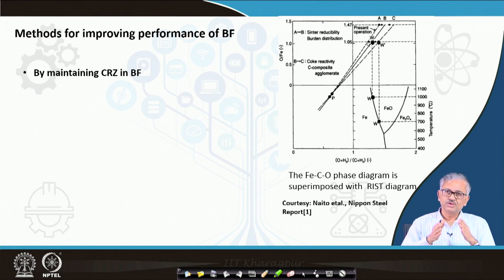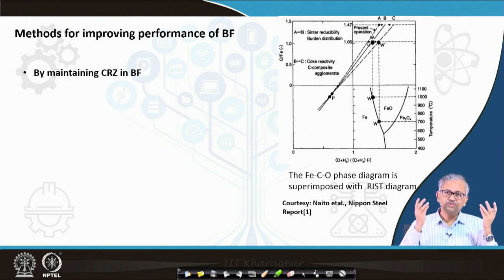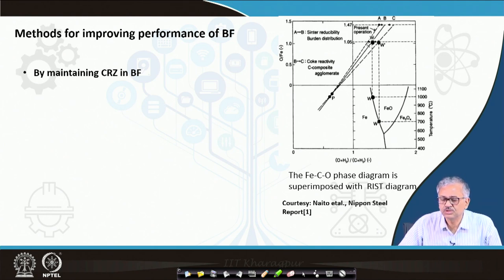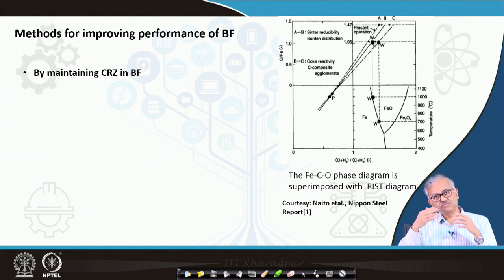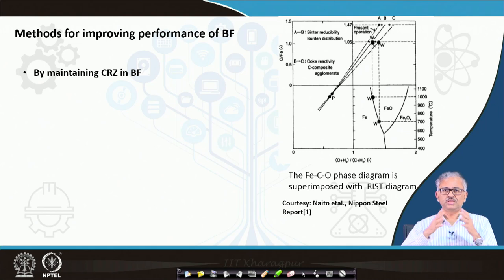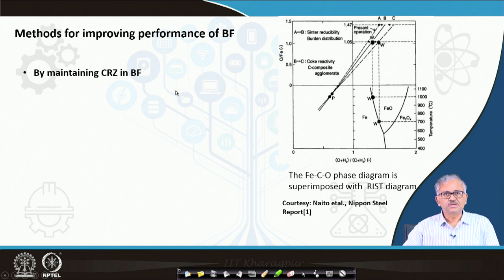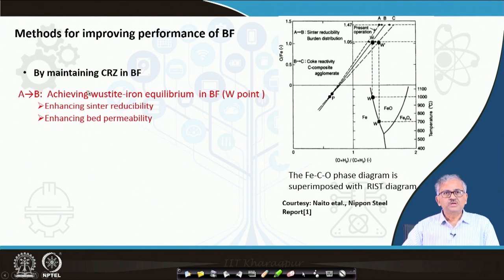Because whatever CO is left after indirect reduction of wüstite is much greater than what is required to take out the oxygen from the higher oxides, if CO is further higher than equilibrium, utilization will be even less. Moving from A to B — if we can maintain a chemical reserve zone in the blast furnace — that is the optimum, the maximum thermodynamic efficiency we can achieve. A to B corresponds to achieving the wüstite–iron equilibrium, that is the W point.